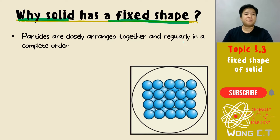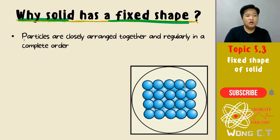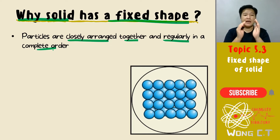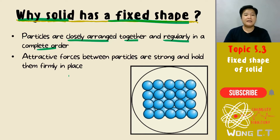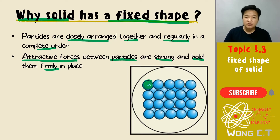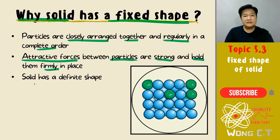Why do we always say solids have a fixed shape? It's all because of the arrangement and attractive forces. The solid particles are closely arranged together in a regular, complete order — meaning the arrangement keeps repeating. They are very closely packed, so the attractive forces between solid particles are extremely strong and able to hold them firmly in one position.